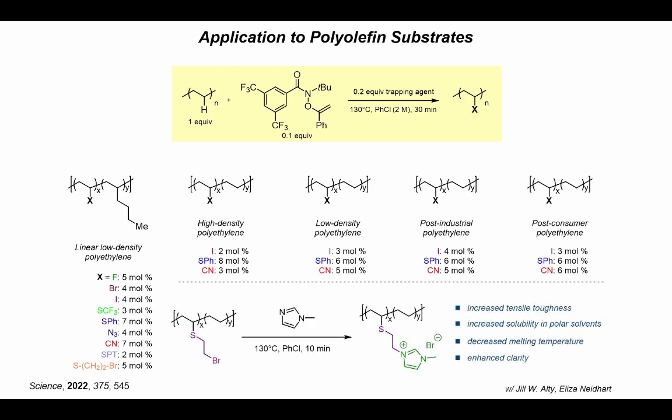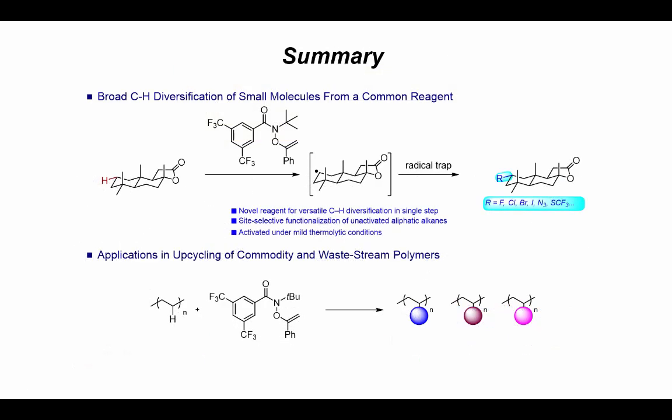Jill also developed conditions to append a thioether with a terminal bromide. She was then able to add imidazole, which substituted on that terminal bromide and rapidly formed ionomer complexes with unique physical properties including increased tensile toughness. In summary, I was able to develop this novel reagent for CH diversification under thermolytic conditions, which can be applied to a number of complex molecules as well as finding applicability in the upcycling of commodity and waste stream polymers.